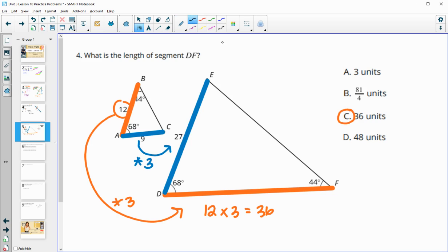You can, again, also set up a proportion here. So if we wanted to call this X, we could compare our orange sides, X over 12, and then compare our blue sides, 27 over 9. And you could cross-multiply and divide here again, and you'd come up with 36 as well.